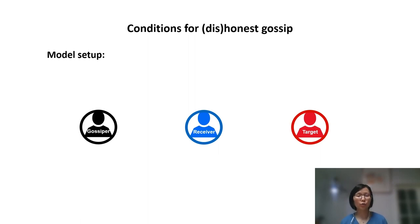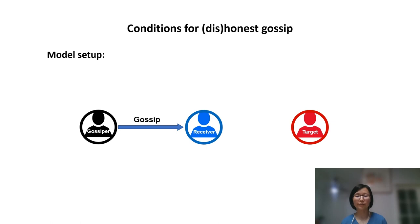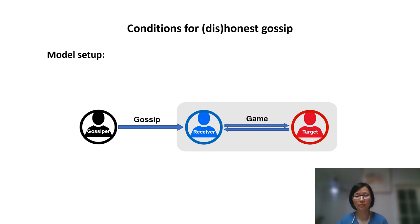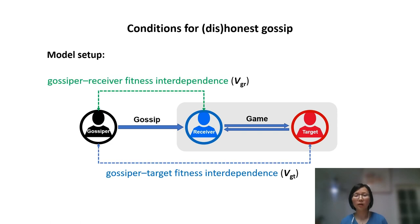In these models, we distinguish three different roles: the gossiper, the receiver, and the target. We assume that the gossiper first shares information about the target's past cooperative or non-cooperative behavior with the receiver, and then the target has one short interaction with the receiver. The model also considers the fitness interdependence of the gossiper with the receiver and with the target — interpreted as how much the gossiper values the receiver and the target, or the gossiper's relationship with the other two.